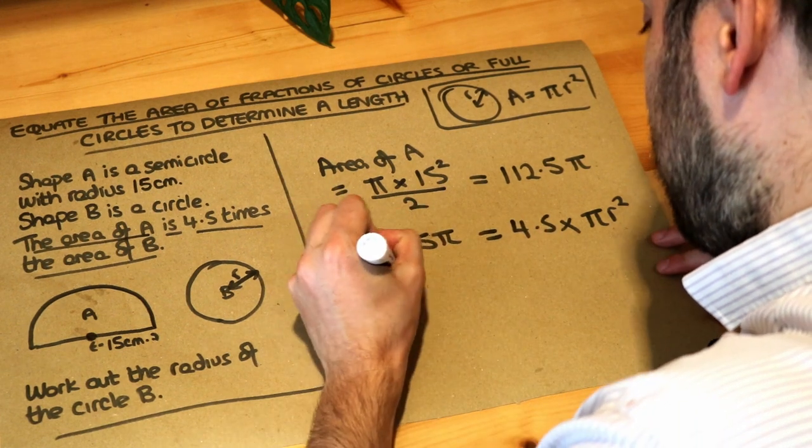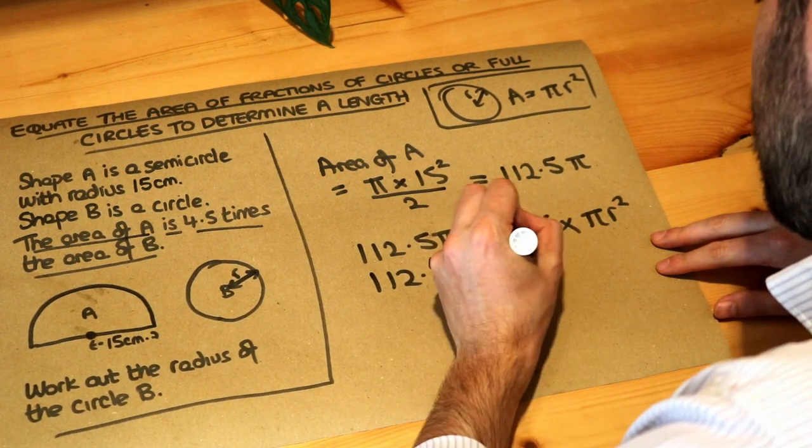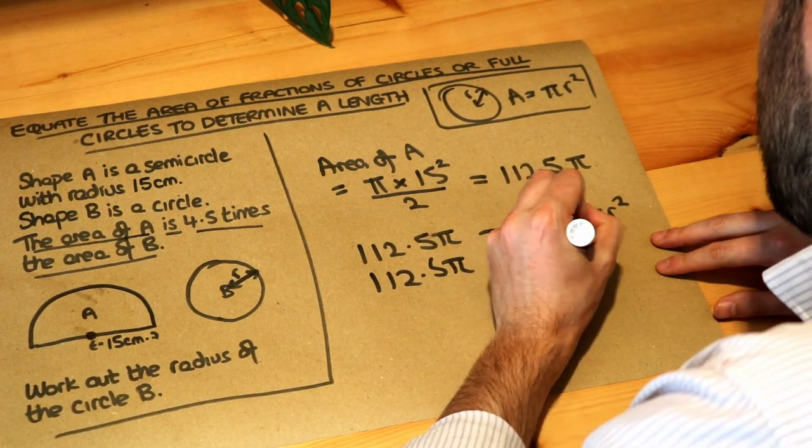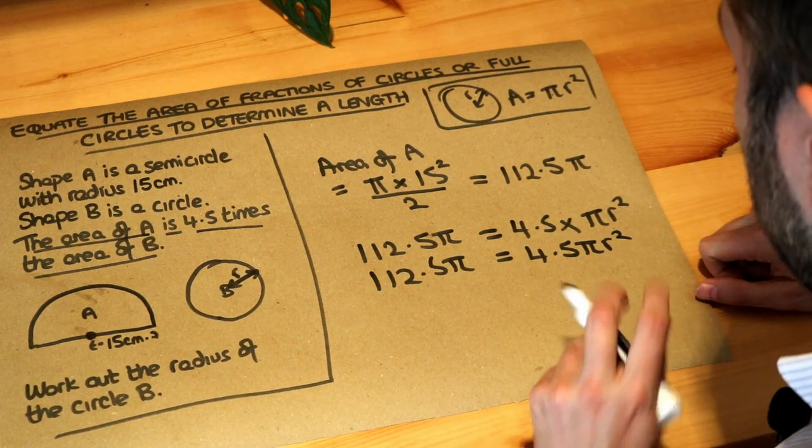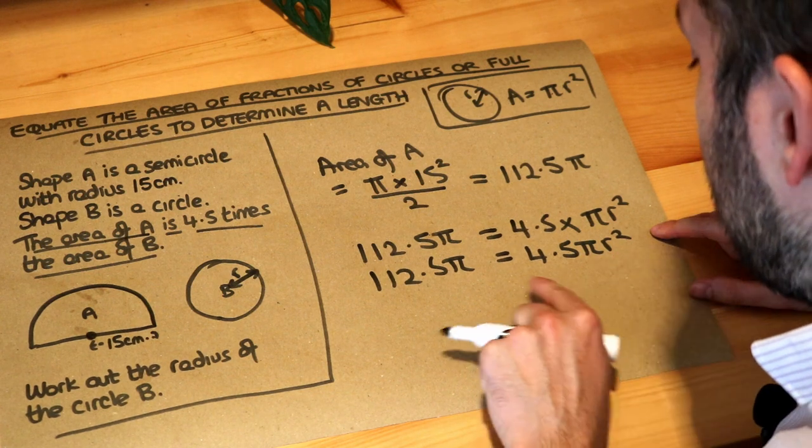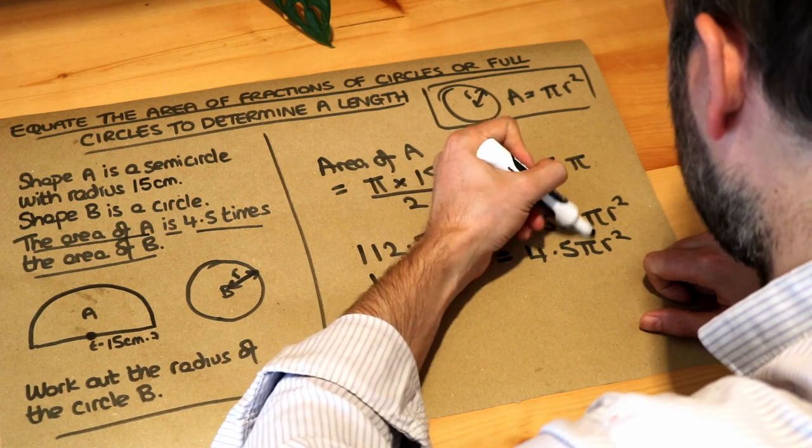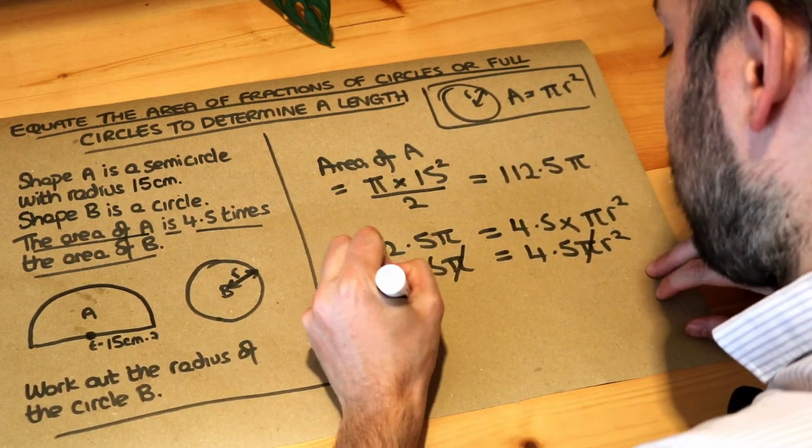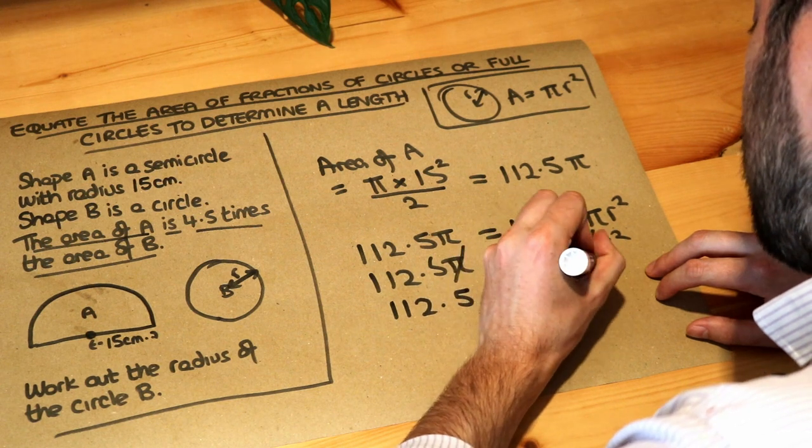So if I just simplify this a bit, when I do 4.5 lots of πR², I can just get rid of the times symbol. You can just write as 4.5πR². And let's see what we might be able to divide by. We're trying to work out R, so we need to get R on its own. Now can you see that we've got π on both sides. We could divide both sides by π. I'm just going to cross them out. So we're just left with 112.5 is equal to 4.5R².